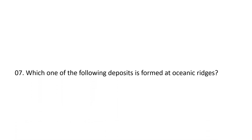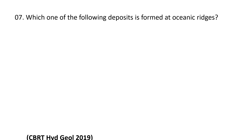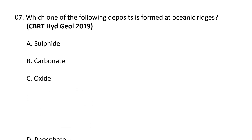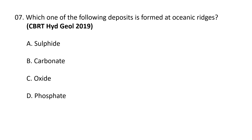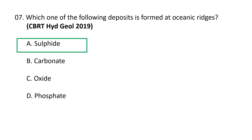Next question. Which one of the following deposits is formed at oceanic ridges? A. Sulphide, B. Carbonate, C. Oxide, D. Phosphate. The correct answer is A — most sulphide deposits are formed at the oceanic ridge.